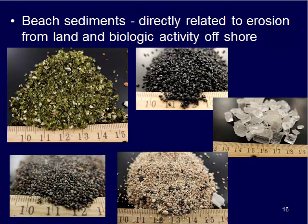To give you some pictures of what beach sediments can be composed of: a lot of the beach sand or gravels you see is directly related to erosion from land and biologic activity offshore. What kind of rocks are present close to that beach? We have this green sand beach example from Hawaii. The reason why it's so green is because the rocks directly around this beach have lots of the green mineral olivine in them, so the beach is very rich in olivine because it's actively eroding out of the cliffs around that beach.